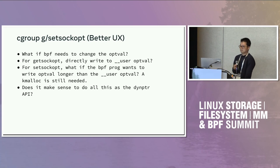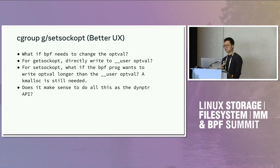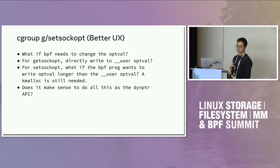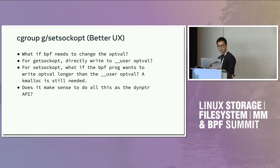For reading, I think it should be doable to read user space memory directly. But for the BPF program to change the option value — for getsockopt, can we directly write to the user option value? And for setsockopt, what happens if the BPF program wants to create a new option value that is larger than the user space option value? How do we deal with this case — do we need to fall back to kmalloc when the BPF program wants to write a larger option value? And the question is: does it make sense to fit all this in the DIN pointer API?